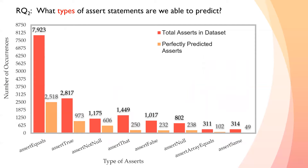The last research question we address is RQ2, where we look at what types of assert statements we are able to predict. The red bars show how many of a particular type of assert statement is contained within our test set, and the light orange bars represent the number of perfectly predicted assert statements from that type that we were able to generate. Our model is capable of producing an assert statement identical to the one written by developers for each assert statement type found within our dataset.